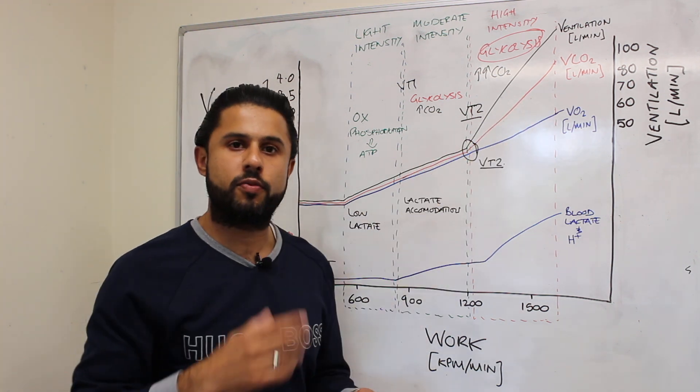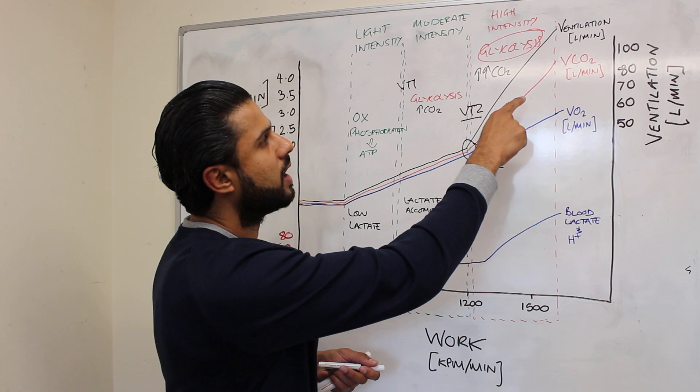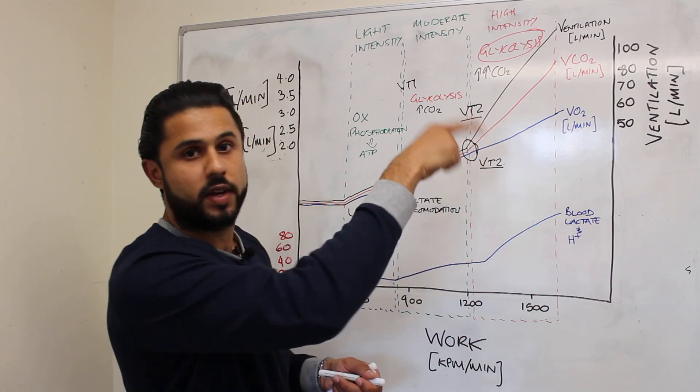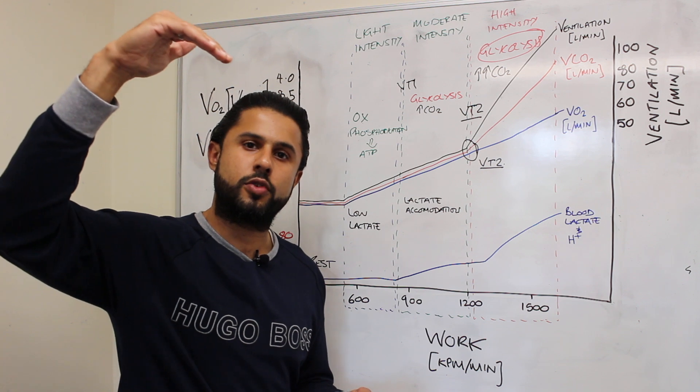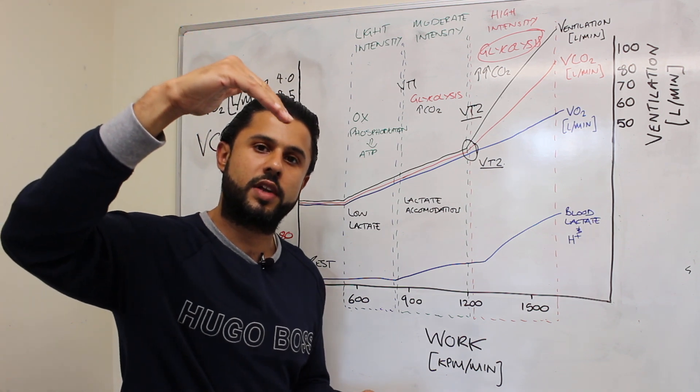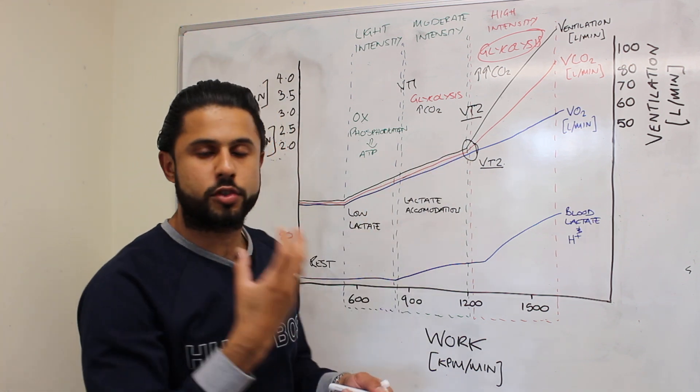We're trying to get rid of that CO2 and if anything this is such an effective method that if we were to map out the ventilatory equivalent of VCO2 we'd actually start to see VCO2 levels start to decline because ventilation is so effective at blowing off or breathing out that excess CO2 that's produced.